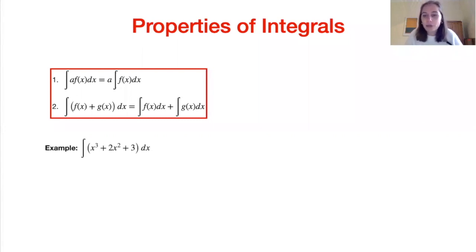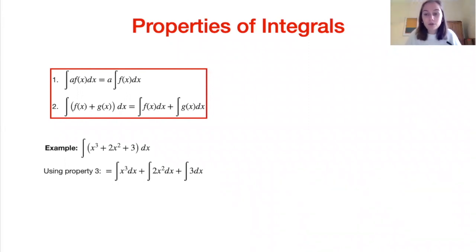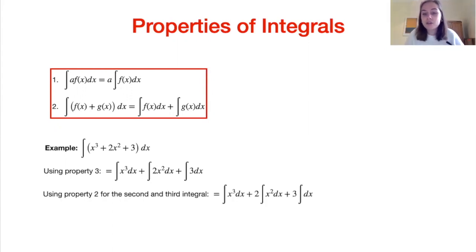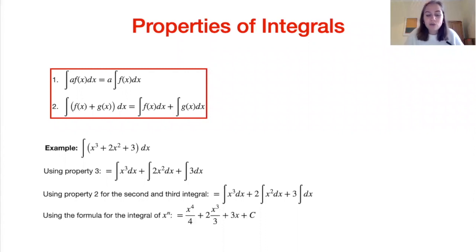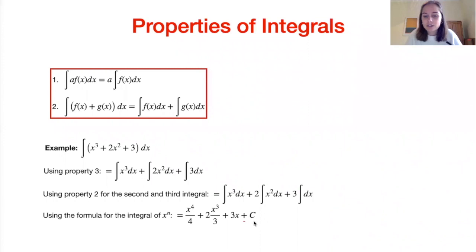Let's see with a relatively simple example how we can apply these properties. We want to integrate x cubed plus 2x squared plus 3 with respect to x. First of all, using property three, we can split this one function up into three different integrals: the integral of x cubed, plus the integral of 2x squared, plus the integral of 3 dx. Using property two, the constants 2 and 3 are taken out to the front of their respective integrals. Finally, using the formula for the integral of x to the n, we find that overall this integral is x to the 4 over 4, plus 2x cubed over 3, plus 3x, plus our integration constant C.